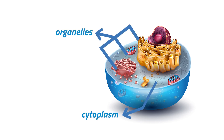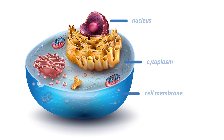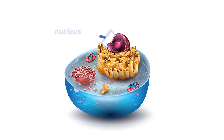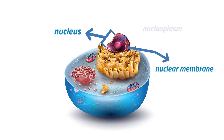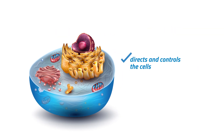Organelles are specialized cell structures that perform specific functions. Lastly, we have the nucleus. The nucleus is a double membrane structure suspended in cytoplasm. It has two important parts, namely the nuclear membrane and nucleoplasm.